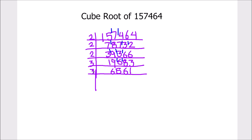Again we are going to divide it by 3. 3 times 2 is 6, 3 times 1 is 3, 2 is remainder, this becomes 26. 3 times 8 is 24, again 2 is remainder, this becomes 21 and 3 times 7 is 21.